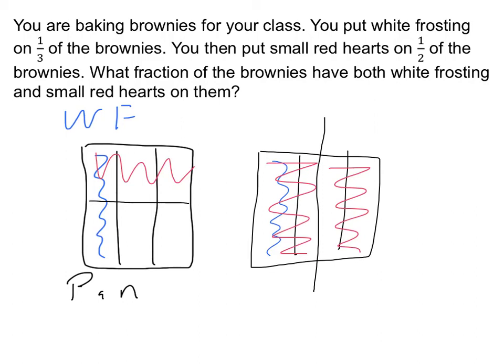If we have this case right here, we're going to have just this one piece that has both white frosting and small red hearts — so the answer would be one-sixth. But if we have this other case, no brownies would have both white frosting and small red hearts, so the answer would be zero.